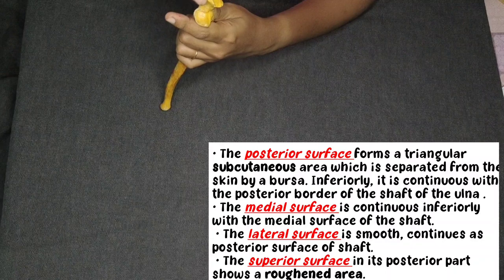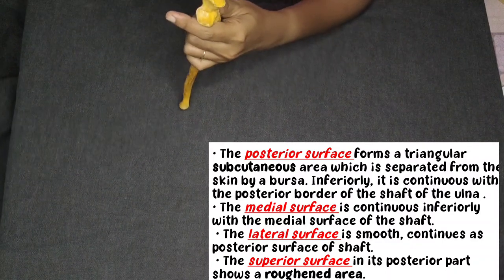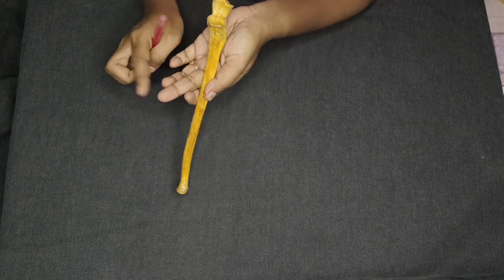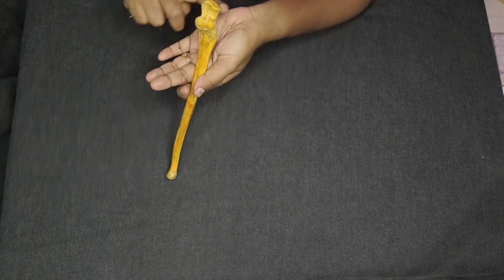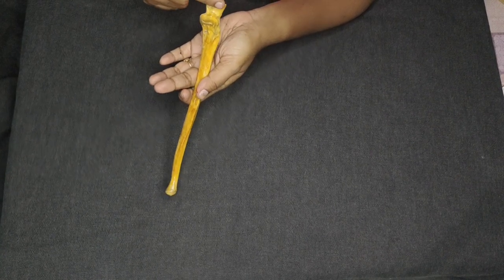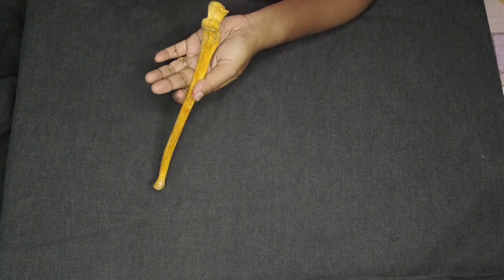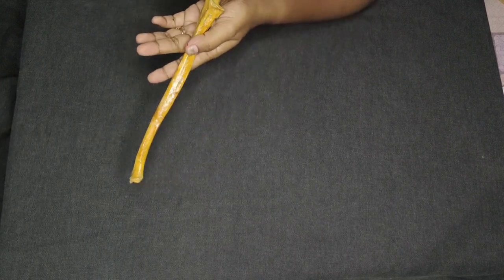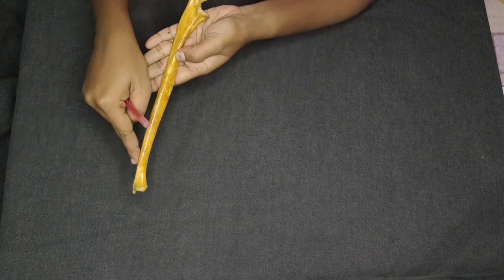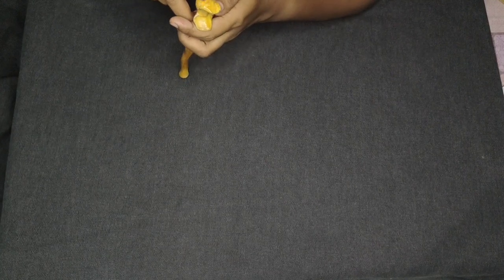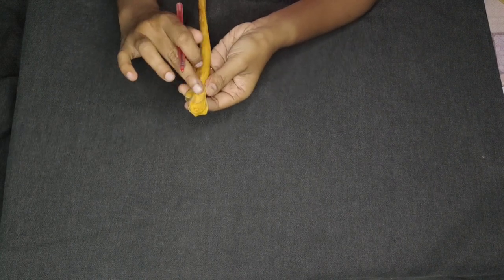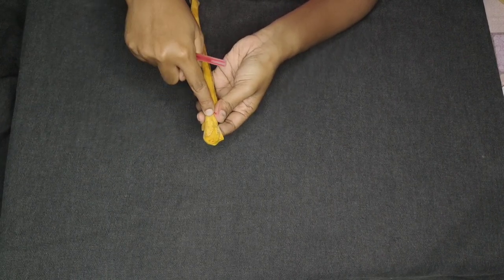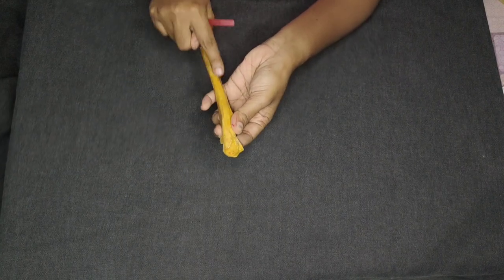Coming to the last surface, the superior surface — there is a rough area at the superior surface. So that is all about the olecranon process: anterior surface has the trochlear notch, medial surface is continuous with the medial surface of the shaft, lateral surface is continuous with the posterior surface of the shaft, superior surface has a rough area, and the posterior surface is subcutaneous and continuous with the posterior border of the ulna.